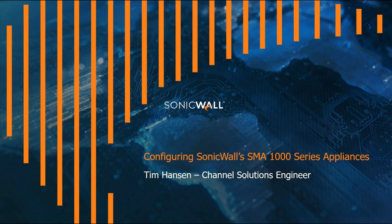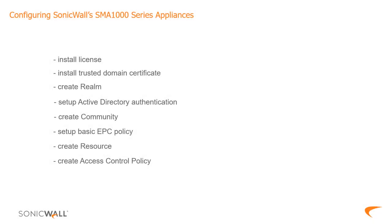Hello everyone, my name is Tim Hansen and today I'm going to be going over how to configure a SonicWall SMA 1000 series appliance, specifically an 8200B virtual appliance. I'm intending a pretty simple configuration today, essentially going through how to license the product, setting up authentication, configuring an endpoint control policy, and giving VPN users access to a terminal server on the LAN. Subsequent follow-up videos may focus on more complex use cases.